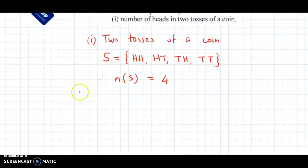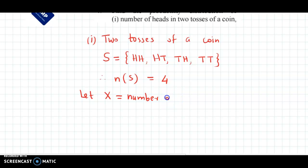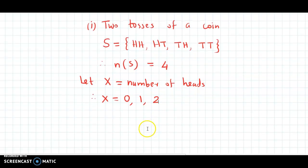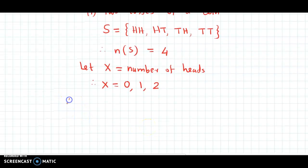Now here the distribution is number of heads. So the random variable is number of heads — suppose we name it X. Let X be the number of heads. If we look at the sample space, the number of heads varies from 0 to a maximum of 2. So X can take values 0, 1, and 2.